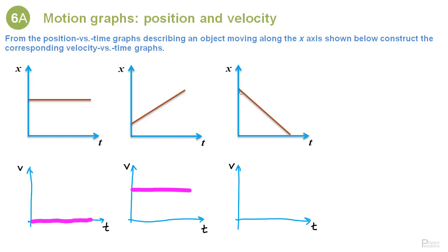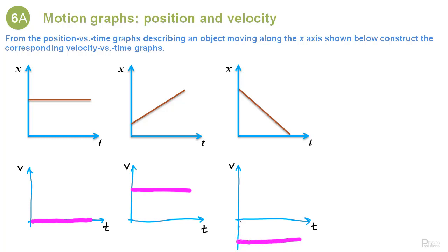Here we have another example. The line is not going up or horizontal — it's going down. That means the slope is negative, so the velocity will be negative, somewhere below the axis. I'll extend the axis downward because it's going to be a negative velocity. The slope of the x versus t plot is negative because the line is going down. The second question: is this line straight or curvy? It's straight. If the x versus t line is straight, the velocity is constant — a completely horizontal line below v equals zero.